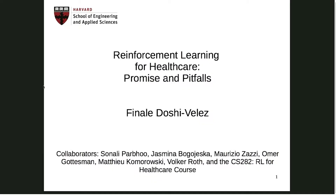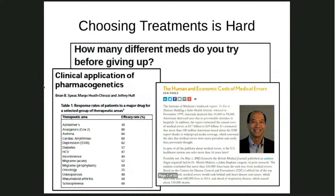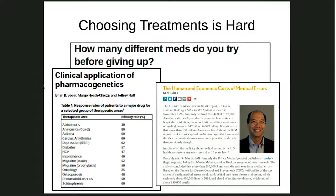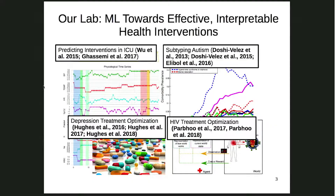It's super exciting to be here. As Francesca mentioned, I'm going to be talking about reinforcement learning for healthcare. Choosing treatments is hard — there are many problems in healthcare, but a fundamental one is how do we find the right treatment for the right person? Our lab focuses on problems in the ICU, in depression, in HIV, and today I want to tell you about our work in HIV.